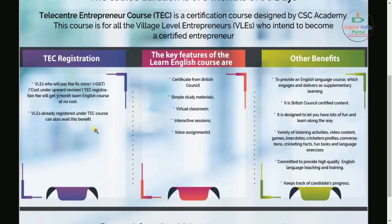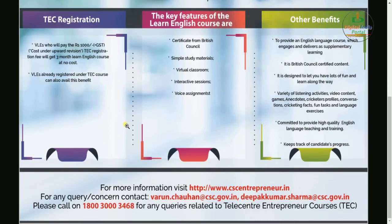The key features of the English learning course include: the certificate is issued by British Council; study materials are very simple; virtual classroom facilities are available with interactive sessions and voice assignments. It is British Council certified content designed to be fun and engaging. The course includes a variety of listening activities, video content, games, cricketers' profile conversations, cricketing fans' fun tasks, and language exercises. It is committed to providing high-quality English language teaching and training, with facilities to track candidates' progress.